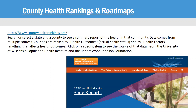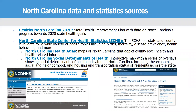There are several sources for North Carolina data, and these can be found on the UNC HSL's public health statistics site. Many people use Healthy North Carolina to look at the state health improvement plan with data on progress towards state health goals. The North Carolina State Center for Health Statistics has state and county level data for a wide variety of health topics.